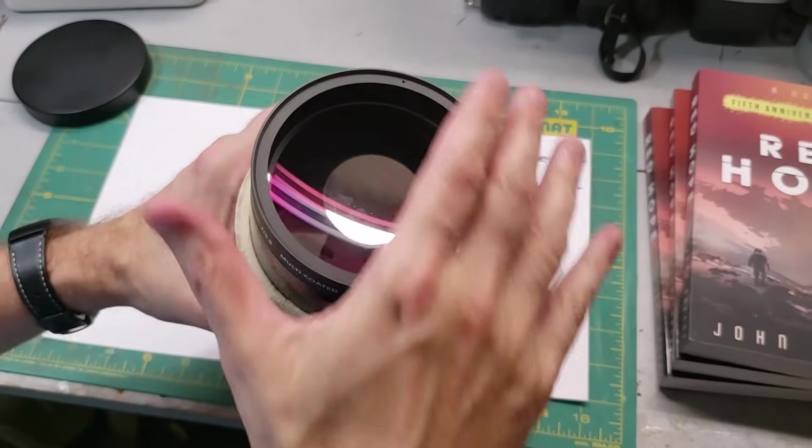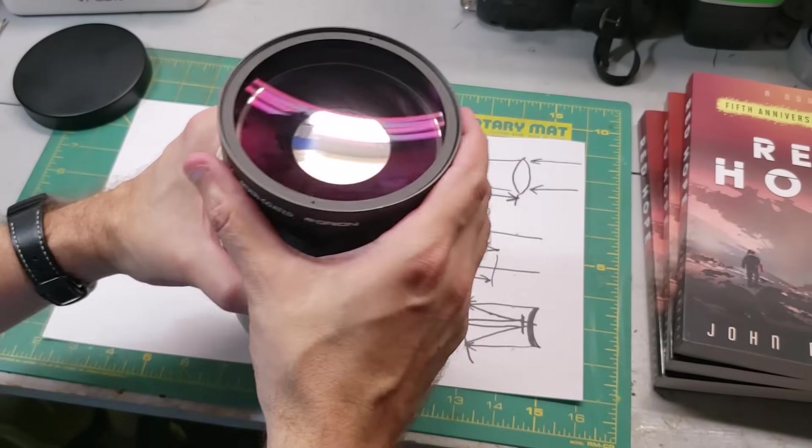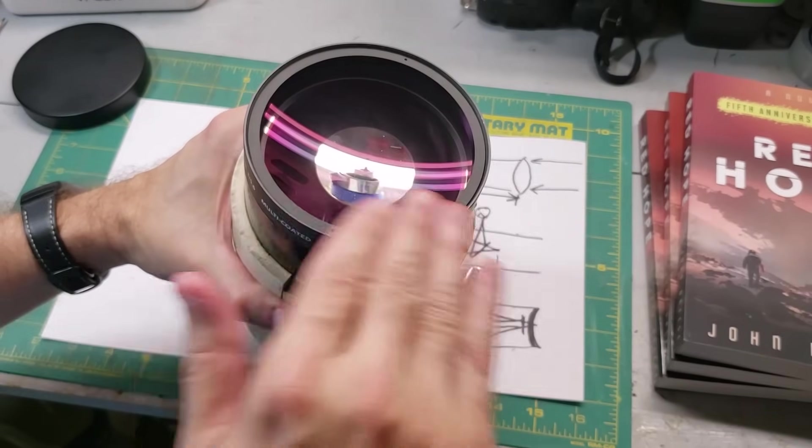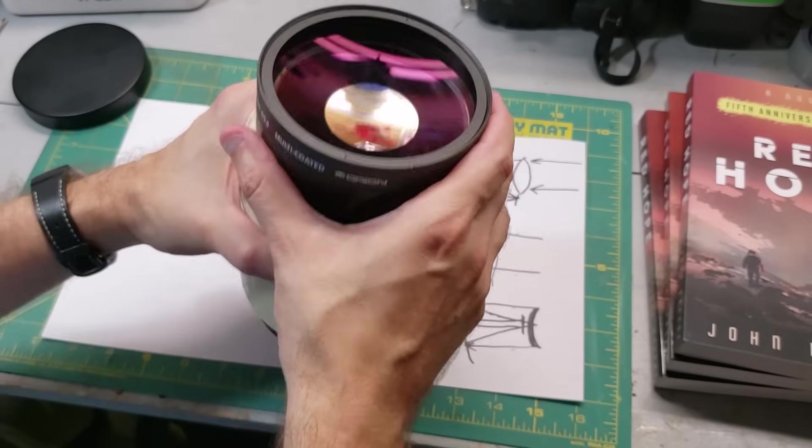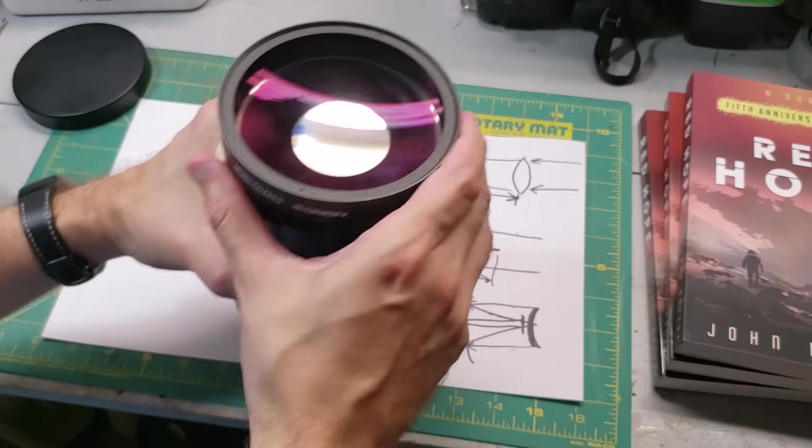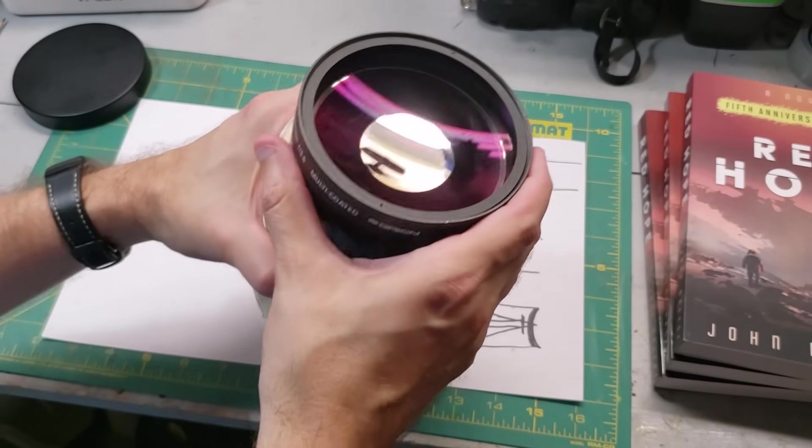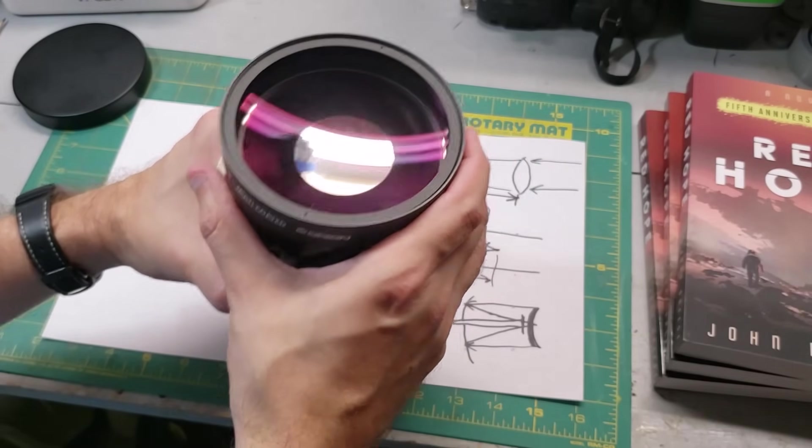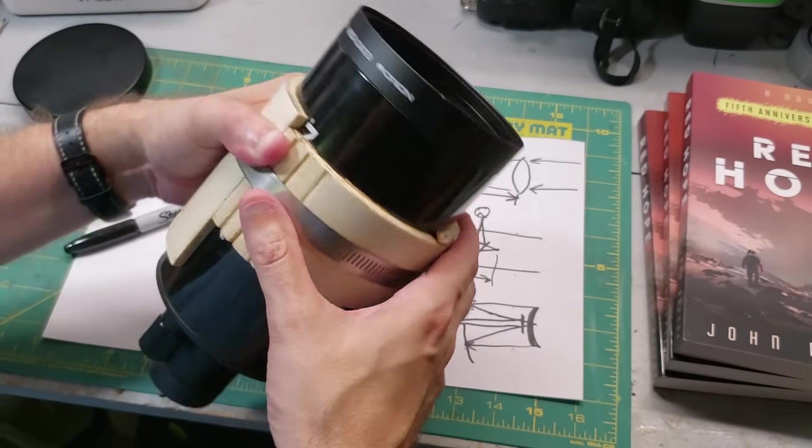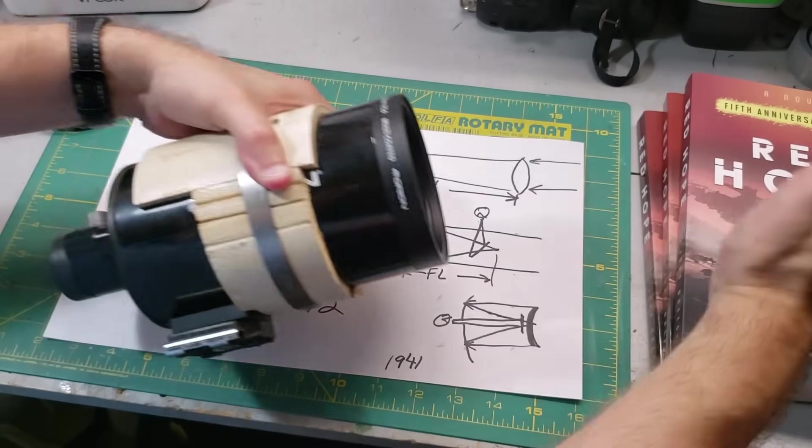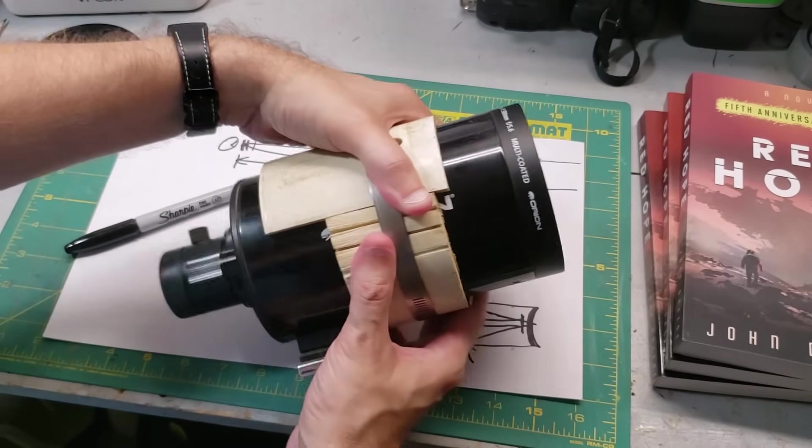If you look at the very front of this Maksutov-Cassegrain telescope, you can see that this isn't just a plate of glass up here at the front. Instead, it's actually a very curved lens, like a bowl shape. It's called a meniscus lens. This was Maksutov's enhancement. So that's the secret to how you can squeeze such a long focal length into such a tiny telescope package.